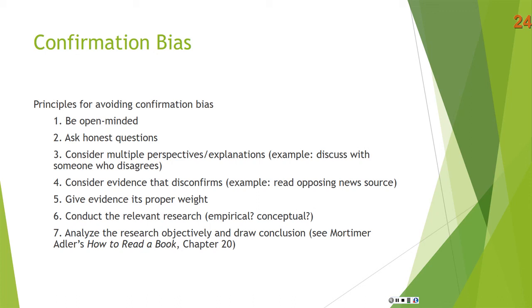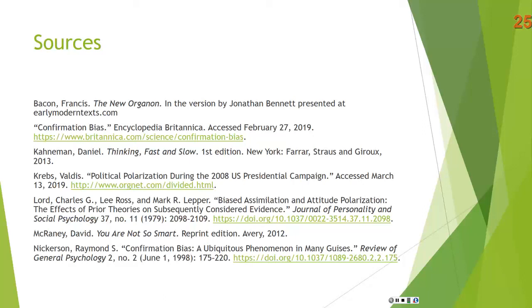For help on this, see Mortimer Adler's 'How to Read a Book,' chapter 20, where he talks about syntopical reading — drawing together information from various sources and coming up with your own conclusion. Here are all the sources I used for this lecture on confirmation bias. If you're really into it, you can go through and read these and you're going to learn a lot. That concludes our lecture.